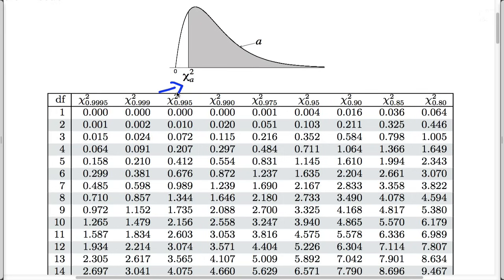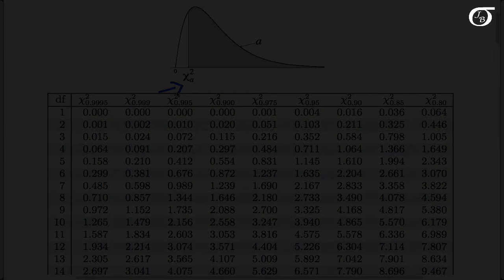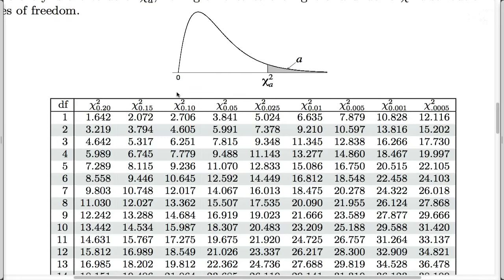Values in the left tail are important for some types of tests, but not so much for chi-square tests for count data. So let's scroll down to the other page. Here's the page that gives chi-square values in the right tail of the distribution, which is typically of more interest for these types of tests.